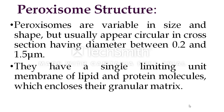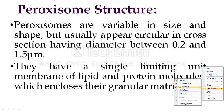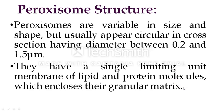Peroxisomes usually appear circular in cross-section, having a diameter between 0.2 and 1.5 micrometers. They have a single limiting unit membrane of lipid and protein molecules which encloses their granular matrix. The membrane is rich in lipid and encloses protein molecules present in the matrix region.